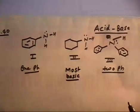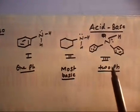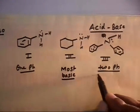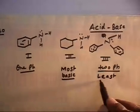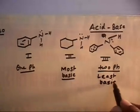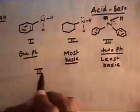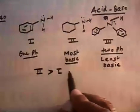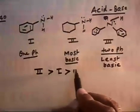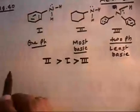Compound two is the most basic. Compound one is the least basic because its lone pair is in resonance with two benzene rings. So the order of basicity is: compound two is most basic, then compound three, and compound one is the least basic.